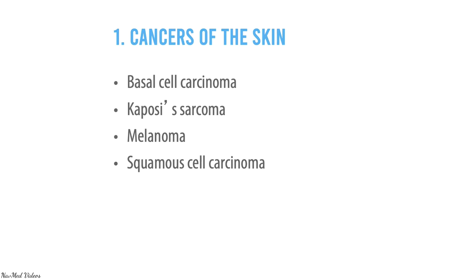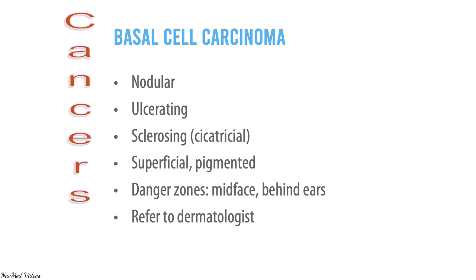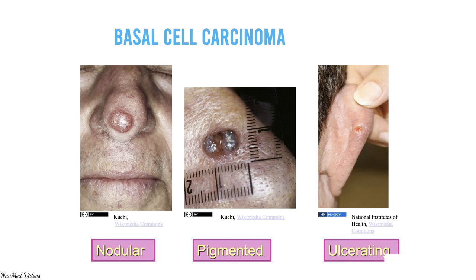The skin cancers you should know about are basal cell carcinoma, Kaposi's sarcoma, melanoma, and squamous cell carcinoma. Basal cell carcinoma is a nodular ulcerating cancer; it can be sclerosing, usually superficial and pigmented. The danger zones are the mid-face and behind the ears. You need to refer to a dermatologist for diagnosis and treatment. The varieties include nodular, pigmented, and ulcerating forms — common locations are the nose, face, and behind the ear.